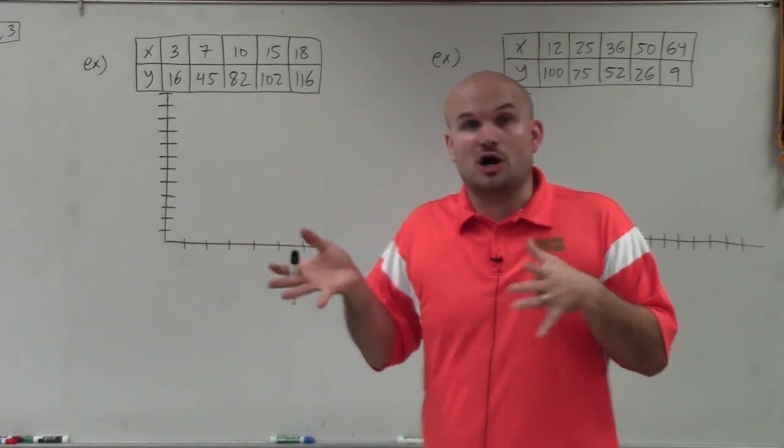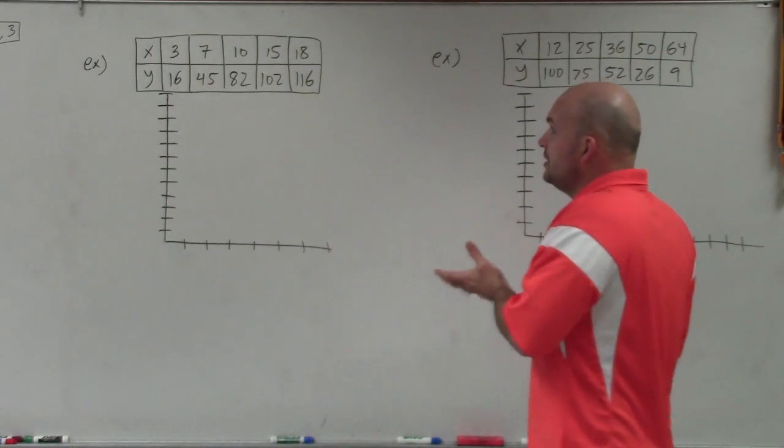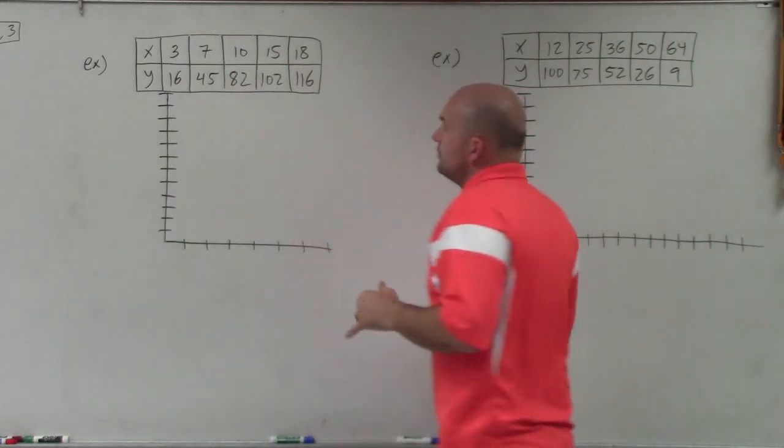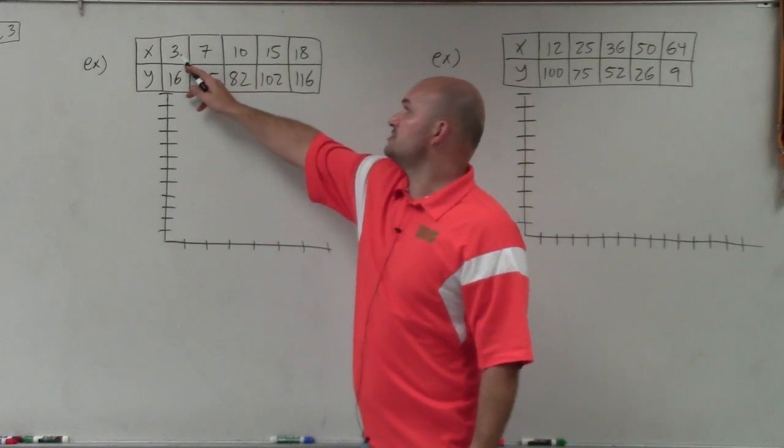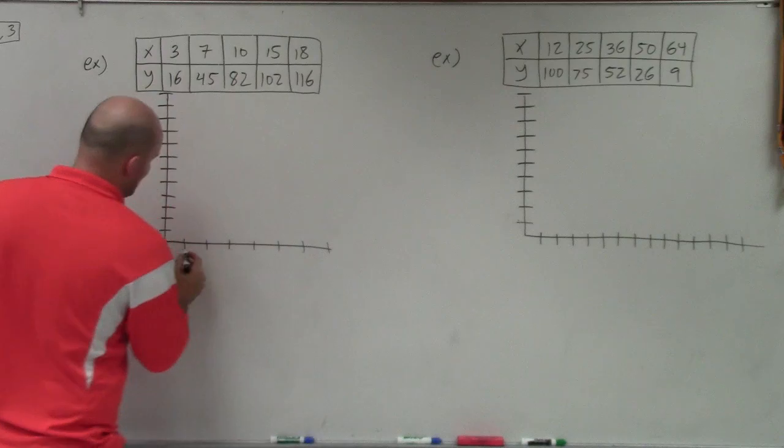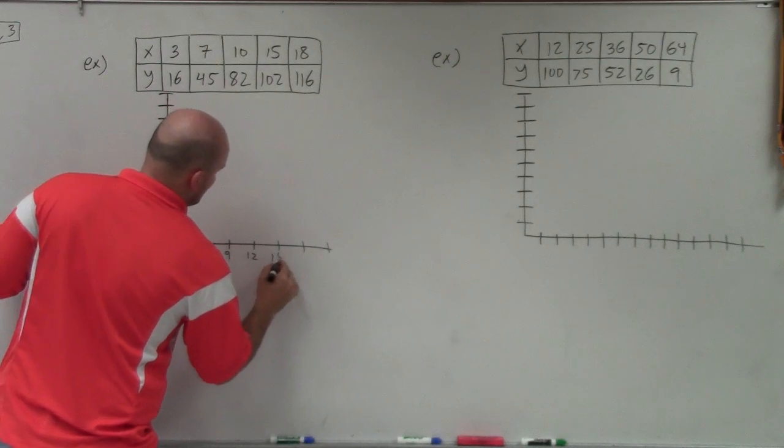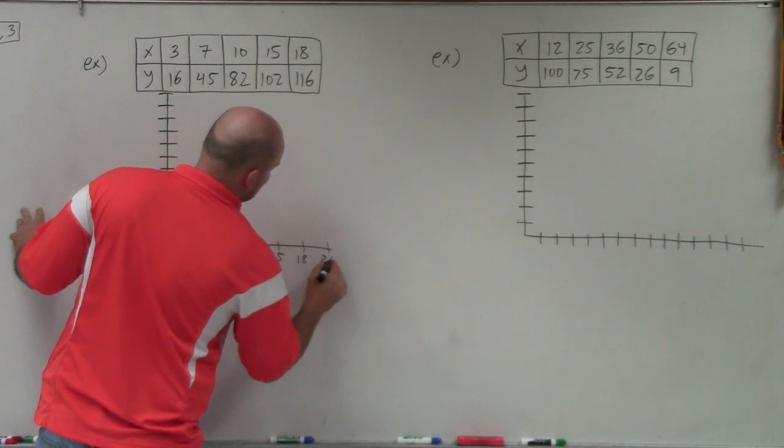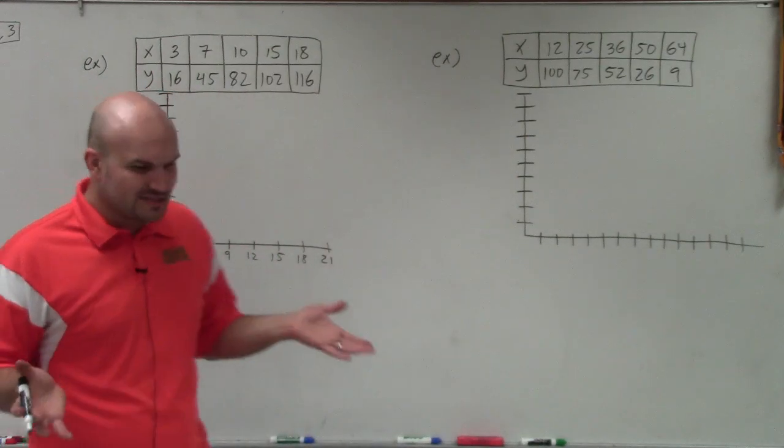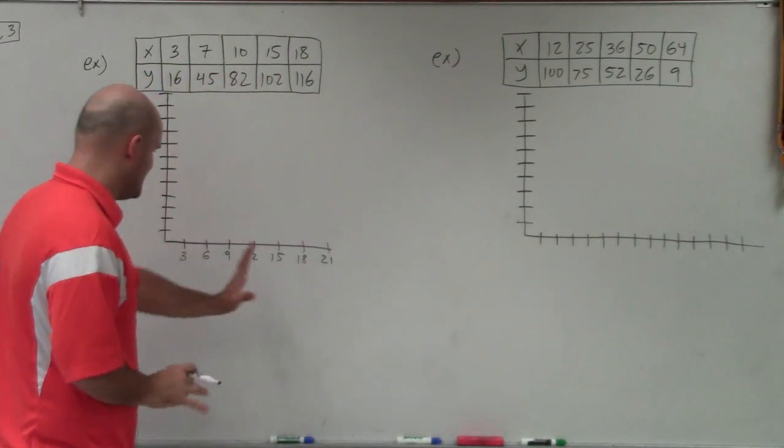Before we get to that, we've got to be able to determine our scale. And that's going to be different depending on how we want to fit our data. So you can see here on my x's, they go start at 3 and they go up to 18. So on the bottom, I'm going to go by 3. So I'm going to do 3, 6, 9, 12, 15, 18, and 21. You can go by 5's, you can go by 1's if you want to. Just make sure that you are consistent.